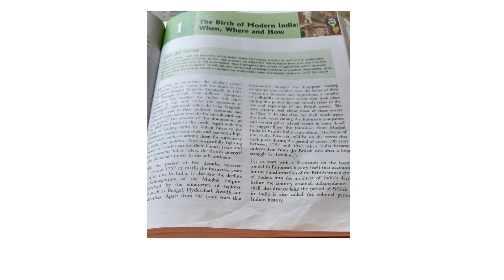According to historians, Indian history was divided into three periods: ancient, medieval and modern. The medieval period considered as the Mughal period — like Babur, Humayun, Akbar who ruled over India — was part of the medieval period. The modern period of India began with the death of the last great Mughal Emperor Aurangzeb.